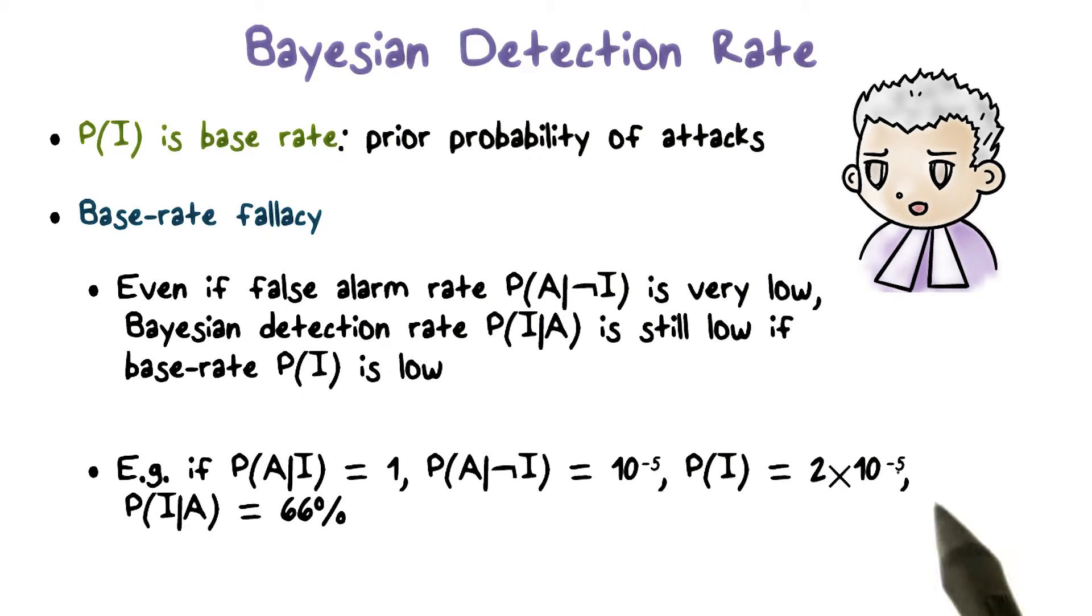If you look at these numbers more carefully, 100% detection rate is perfect. False alarm rate of 10 to the minus 5 is also great. This is not zero, but it's very, very low. So you may ask, is this low base rate realistic? This is 2 times 10 to the minus 5.